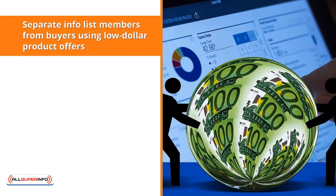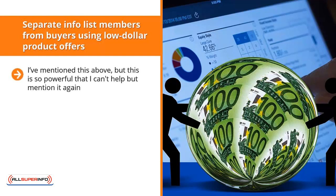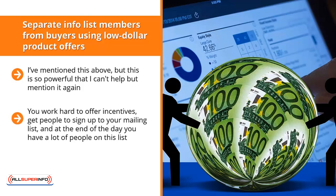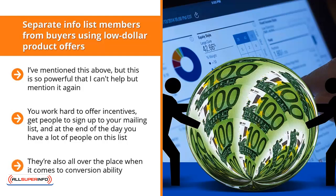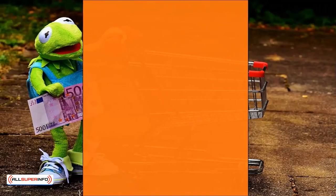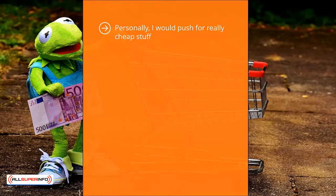Separate info list members from buyers using low-dollar product offers. Depending on your niche, you may end up with a general information list. You work hard to offer incentives and get people to sign up, but these people are generally just looking for general information and are all over the place in terms of conversion ability. In this case, send regularly scheduled updates with low-dollar information product offers — such as a $1 booklet or $1 template package. Set up your email management software to automatically unsubscribe people who buy these $1 items and move them to your buyer's list.